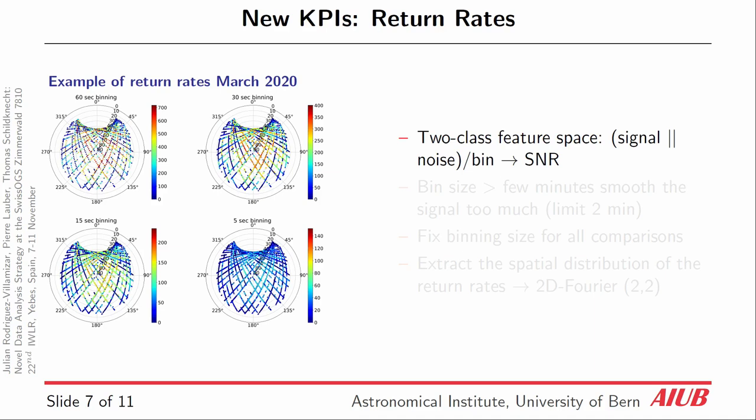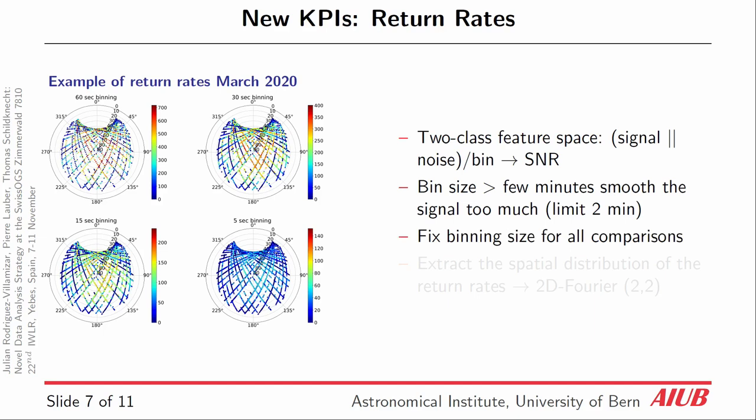We can also see that in this example, we show different binning sizes to see by how much the signal is smoothed if we increase the binning size. We found that the limit is two minutes in time — after exceeding two minutes, the signal-to-noise ratio worsens considerably. Since we want to do this analysis for a year, we have to fix the binning size for the remaining comparisons.